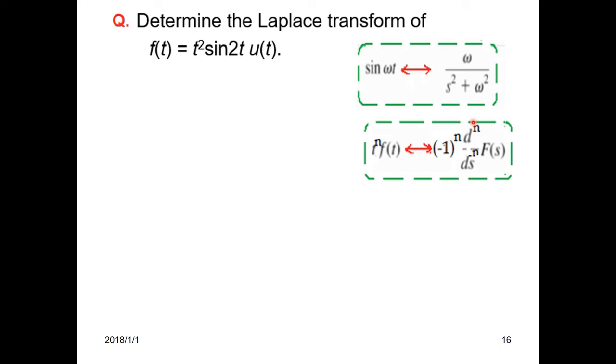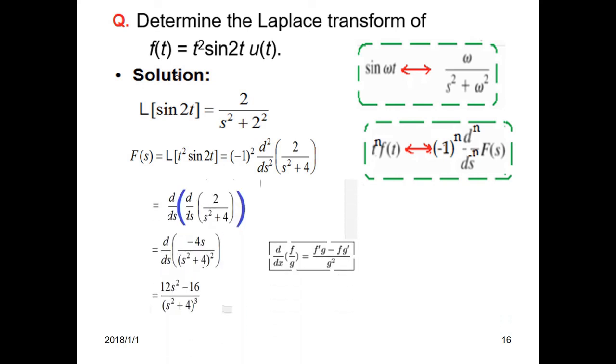Now in our case n is 2, so we'll put n equals 2 in all these places, and F(s) is the function. Sine omega t is the function, so we'll use that. This is the solution for Laplace transform of sine 2t. So we solve this part, and then let's go for the multiplication. Laplace of t squared sin(2t) will be, now just keep this formula in mind: minus 1 to the power n, d squared over ds squared, and the function sine 2t. So d squared over ds squared of 2 over s squared plus 4.